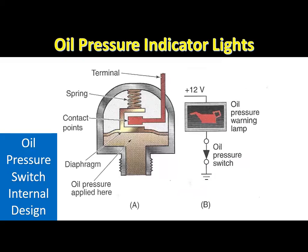Full pressure from the lubrication system is applied to the sending unit. If less than 3 psi (20.6 kPa) of oil pressure is applied, the contacts in the unit are closed. Under this condition, current flows through the oil pressure indicator light and the sending unit contacts to ground, and the light is on. When the engine starts and oil pressure exceeds 3 psi (20.6 kPa), the sending unit contacts are forced open and the indicator light goes out.